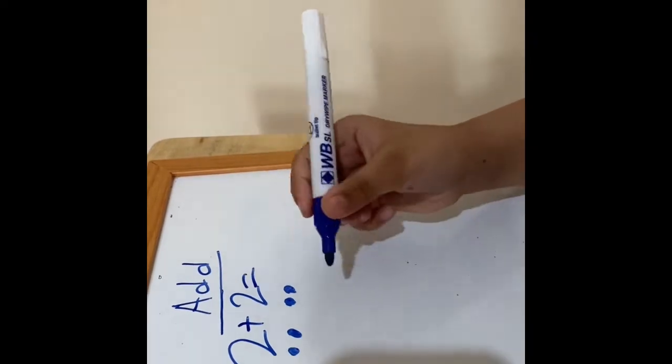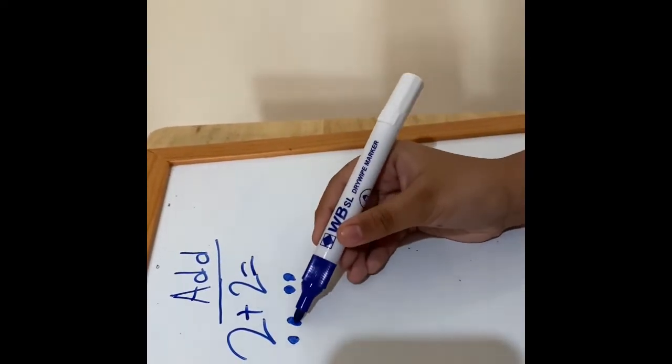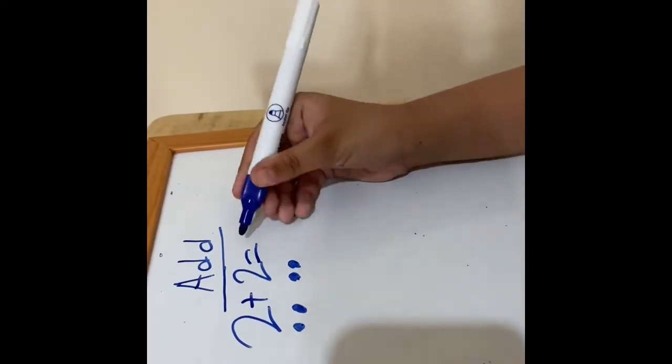If you count all the dots, you would get the answer: 1, 2, 3, 4. The answer is 4, and that's how you get your answer.